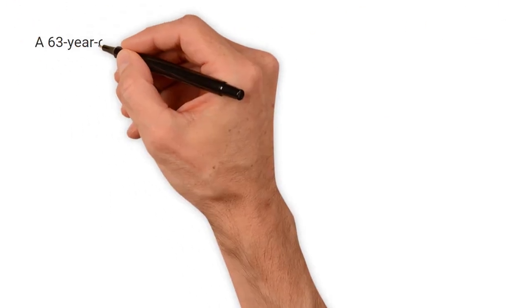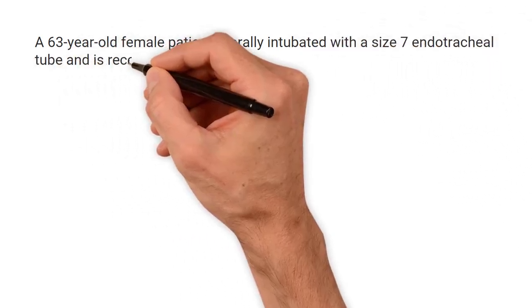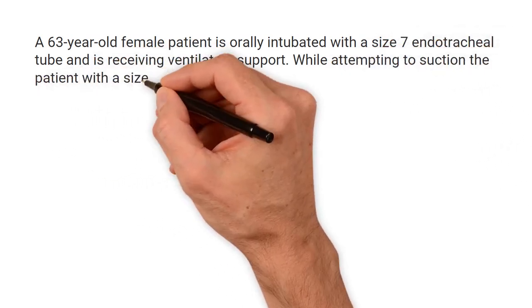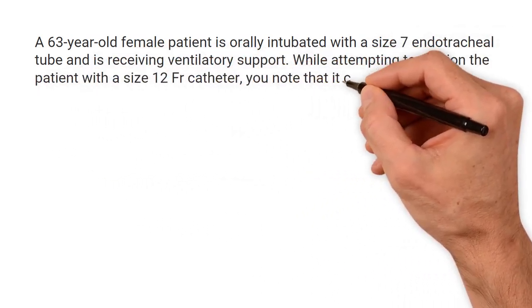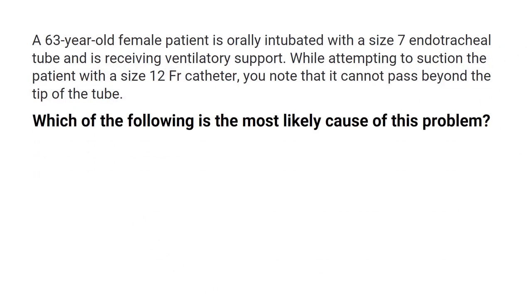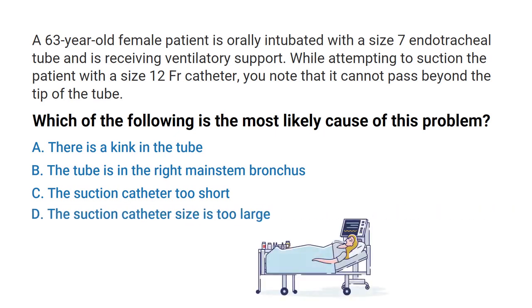A 63-year-old female patient is orally intubated with a size 7 endotracheal tube and is receiving ventilatory support. While attempting to suction the patient with a size 12 catheter, you note that it cannot pass beyond the tip of the tube. Which of the following is the most likely cause? A) there is a kink in the tube, B) the tube is in the right mainstem bronchus, C) the suction catheter is too short, or D) the suction catheter size is too large. Do you know the correct answer?